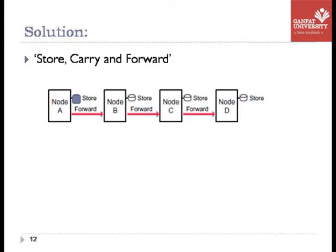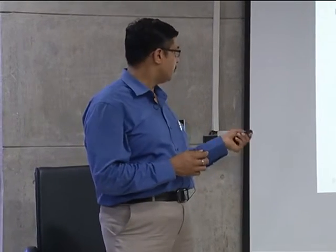Say you want to send a message from node A to D. The pink line shows a connection that may be momentary, with frequent disconnections. Node A has custody of the message and stores it in persistent storage. How long does the message stay with node A? Until node A finds some node in the vicinity to forward the message to. As node A comes into contact with node B, it forwards the message. As node B contacts node C, it forwards again. With this store-carry-and-forward mechanism, the message eventually reaches from source to destination.